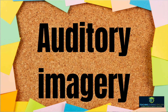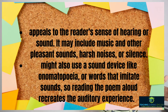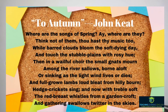The second type of imagery is auditory imagery. This form of poetic imagery appeals to the reader's sense of hearing or sound. It may include music and other pleasant sounds, harsh noises, or silence. The poet might also use a sound device like onomatopoeia — words that imitate sounds — so that reading the poem aloud recreates the auditory experience. One example comes from Keats's short poem 'To Autumn,' where he concludes with auditory imagery.